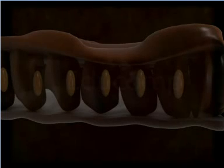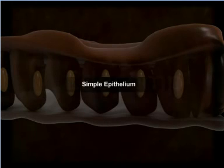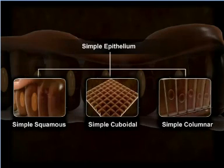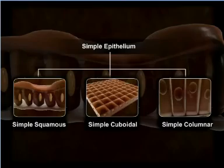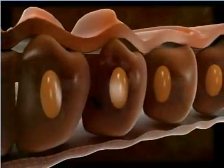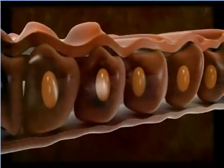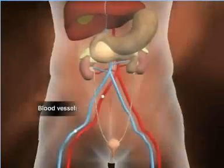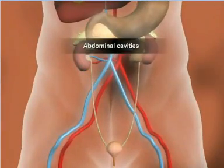Let's now learn about the simple epithelium in detail. Based on the structural differences in the tissue, the simple epithelium is classified into simple squamous, simple cuboidal, and simple columnar varieties. The cells of the simple squamous epithelium are broad, single-layered, thin, flat, and irregular. These cells have centrally located nuclei that are elongated and elliptical in shape. The simple squamous epithelium forms the lining of the blood vessels and the thoracic and abdominal cavities.